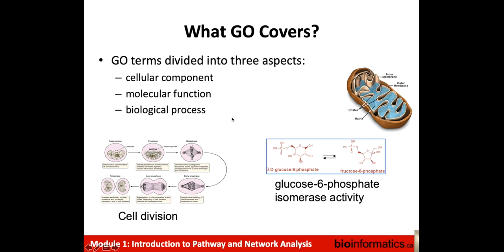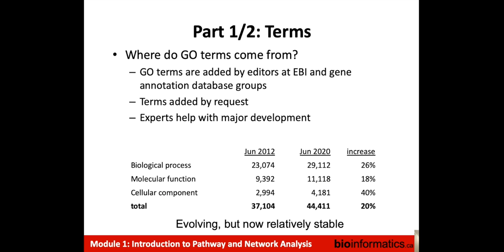Gene Ontology covers three different aspects of gene function. The Cellular Component branch covers where genes are located in the cell. The Molecular Function branch covers molecular functions like enzyme functions. And the Biological Process aspect covers pathways like cell division or more general processes. Gene Ontology is actually composed of two parts. The first part are terms — GO terms are added manually by editors at various annotation groups worldwide, added by request, and experts help with major redevelopment. There are over 44,000 terms currently in the ontology, and it has remained relatively stable in recent years.